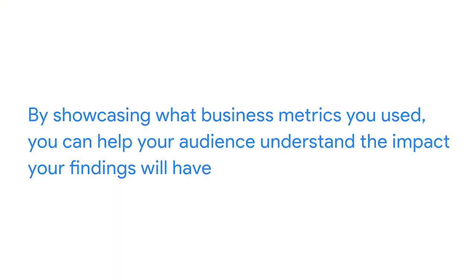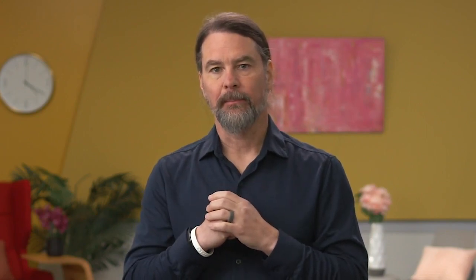You also want to make sure you're outlining and connecting with your business metrics. By showcasing what business metrics you use, you can help your audience understand the impact your findings will have. Think about the metrics we use for our avocado presentation — we track the number of online searches for avocados from different months over several years to anticipate trends and demand. By explaining this in our presentation, it's easy for our audience to understand how we used our data. These data points alone — the dates or number of searches — aren't useful for our audience, but when we explain how they are combined as metrics, the data we're sharing makes so much more sense.